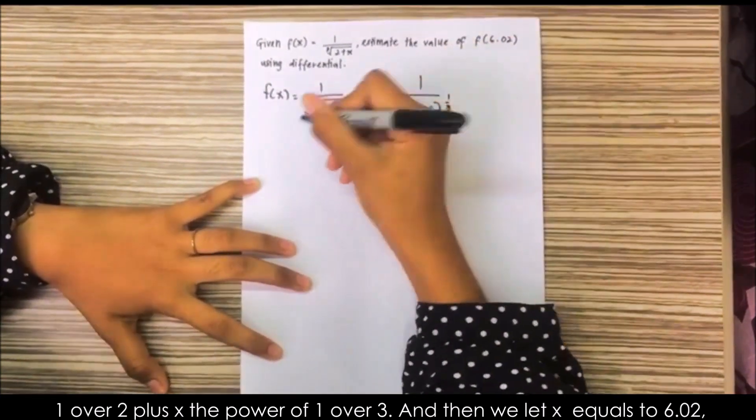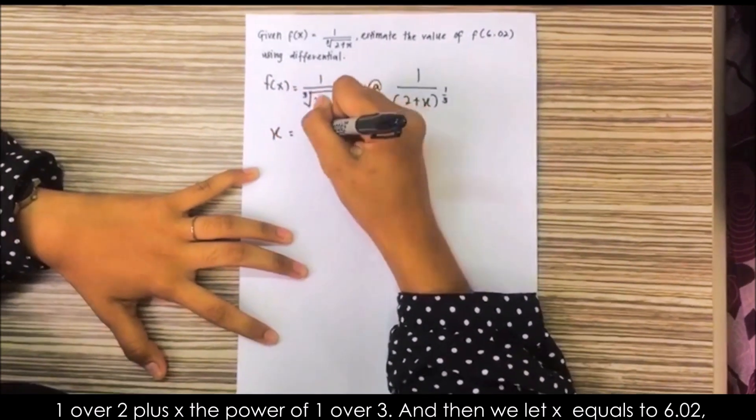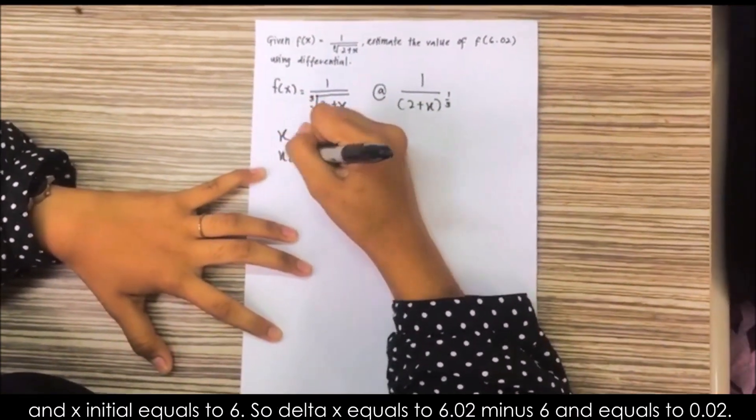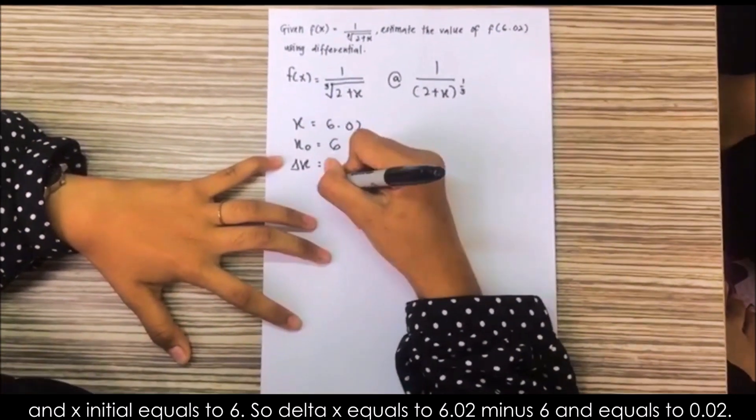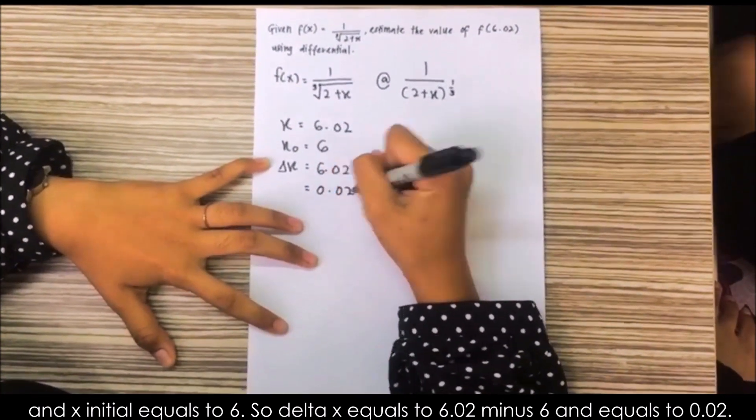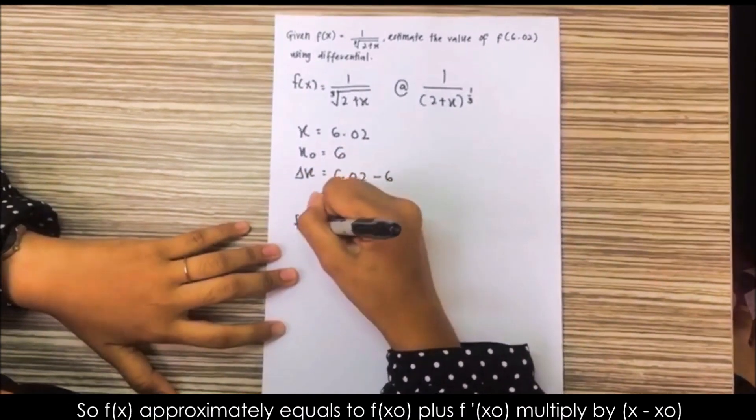And then, we let x equals 6.02 and x initial equals 6. So, delta x equals 6.02 minus 6 and equals 0.02.